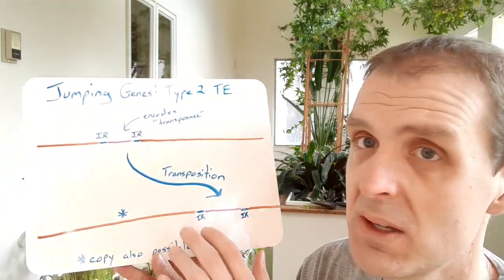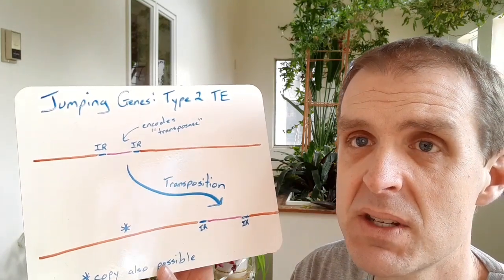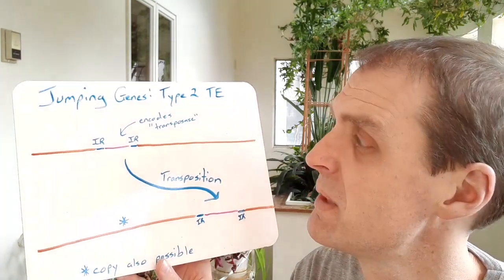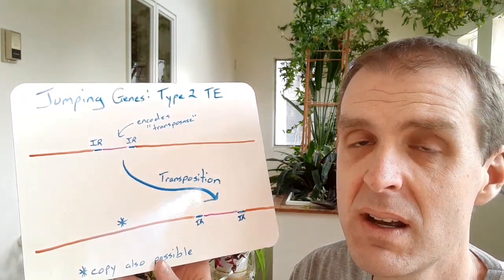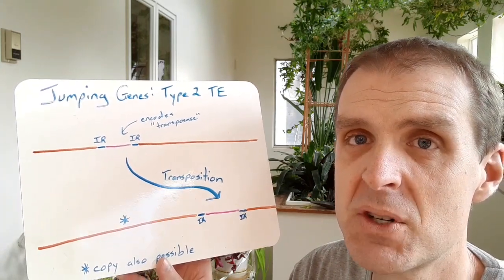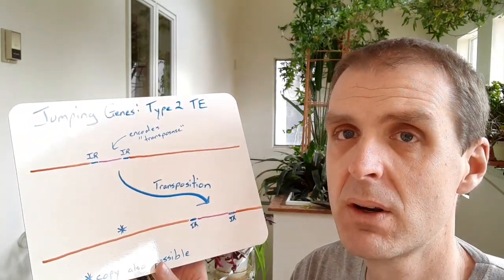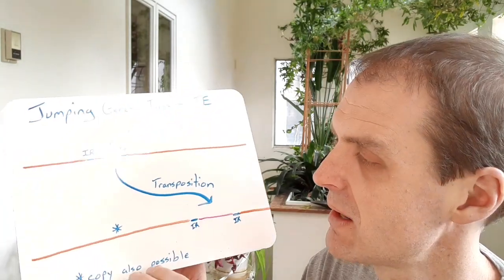These sorts of things were made famous by some studies by Barbara McClintock from the 1940s where she was studying the genetic mechanism for corn to change color.